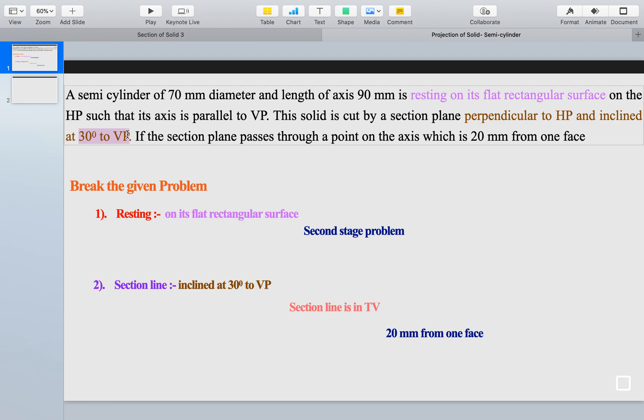Now, the further part will give us some amount of idea about this. If the section line passes through a point on the axis which is 20mm from one of the faces...